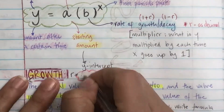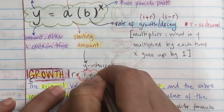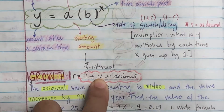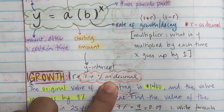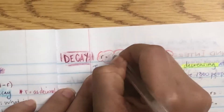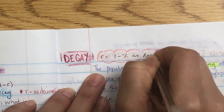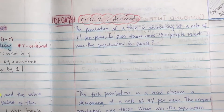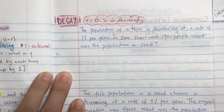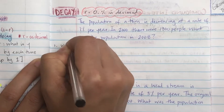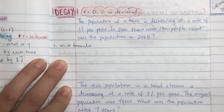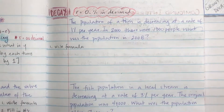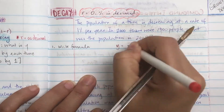Remember: growth means B equals 1 plus percent as a decimal — very, very important. Decay on the other hand is 1 minus percent as a decimal. So growth is 1 plus percent as a decimal; decay is 1 minus percent as a decimal. It's the same exact process. Step one: write down the formula — this is given to you in the formula sheet so you don't have to memorize it.